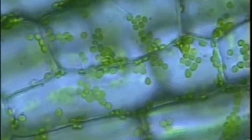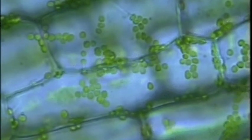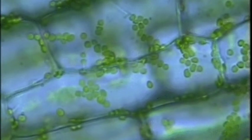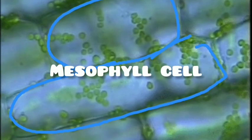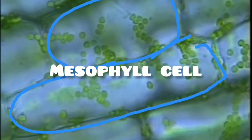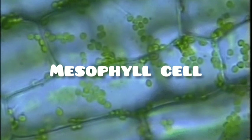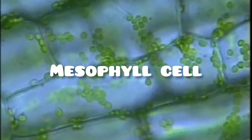So what is special in green plants that is helpful for the survival of the plant? Today we will discuss about the same. As you can see in the picture, there are brick or sack-like structures shown here. These structures are called mesophyll cells.